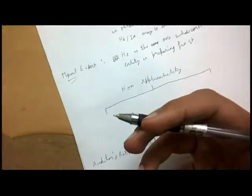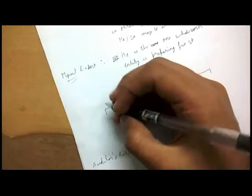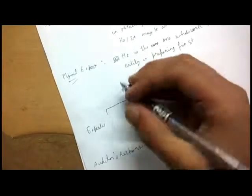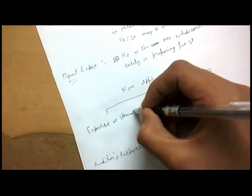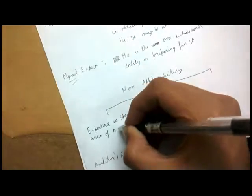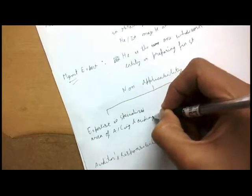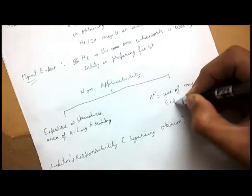ISA 620 has two non-applicability cases. First, it does not apply to an expert who has expertise in the specialized area of accounting and auditing. Second, it does not apply when the auditor is using the work of a management expert.